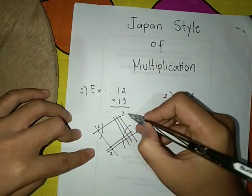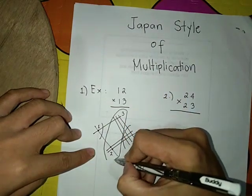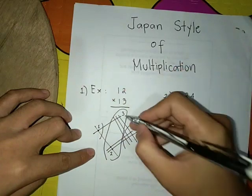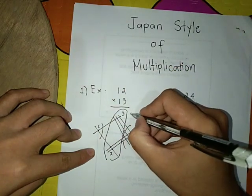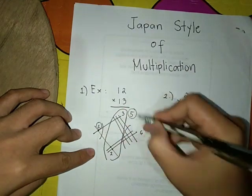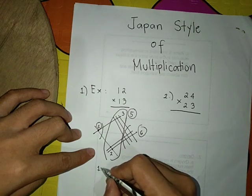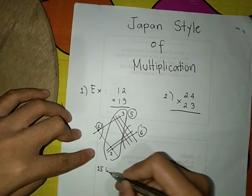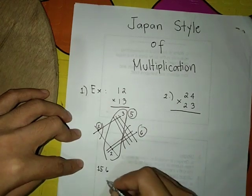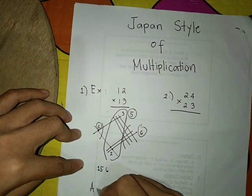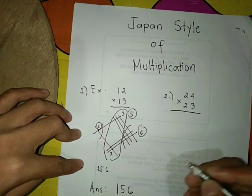So here you need to add. Two plus three is equal to five, so the answer is 156.